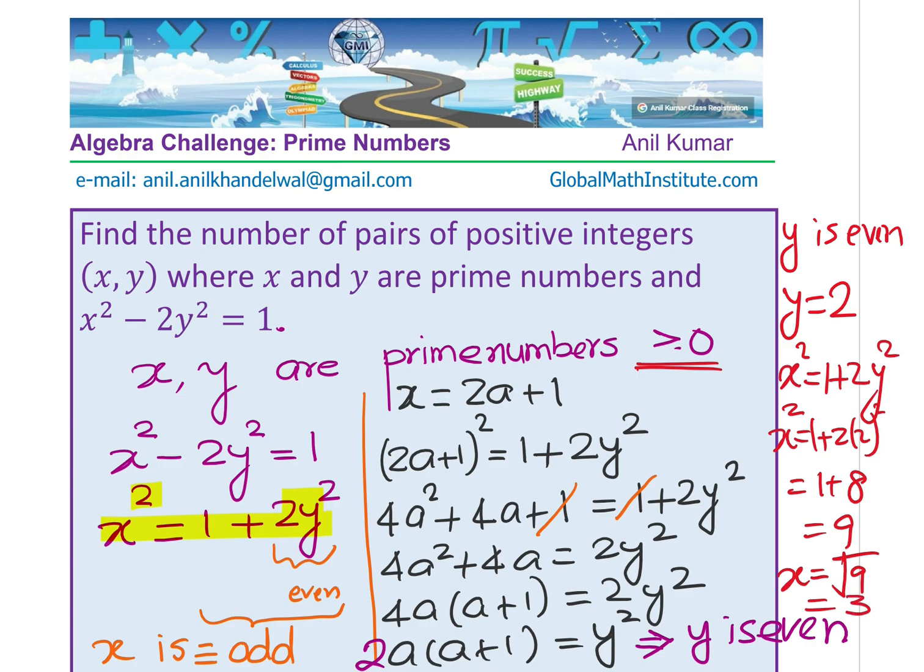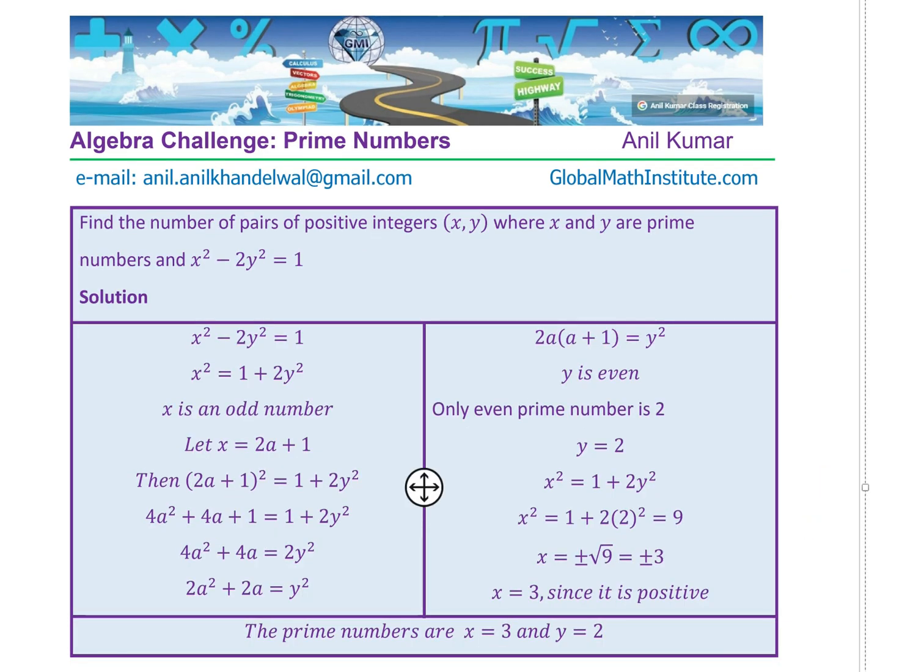I hope this particular solution is absolutely clear to you. Here is the copy of our solution which we just discussed. Once again, we rearrange the equation: x² = 1 + 2y², and clearly 1 plus an even number means x is an odd number.